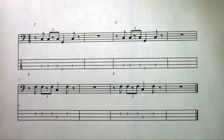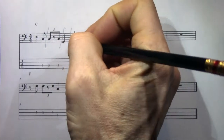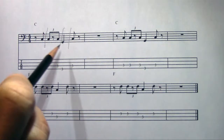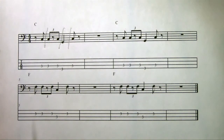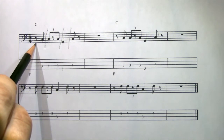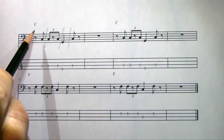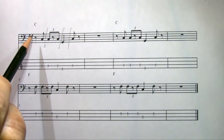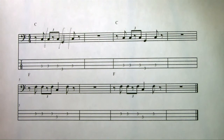We divide the beats like this: one-and, two-and, three-and, four-and. So this first symbol — an eighth note rest, followed by an eighth note — means we don't start playing on the one. We rest for half a beat: one-and. So that's what the drummer was talking about, coming in on the end of one.